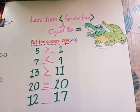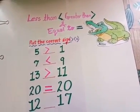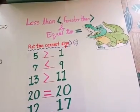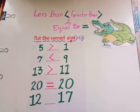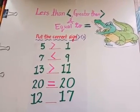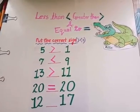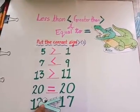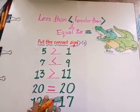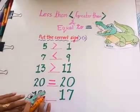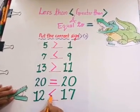Now next. Now tell me children, which number will Ellie eat? Yes, Ellie likes the bigger number, so she will eat number 17. So like this, we will put the less than sign, like this.